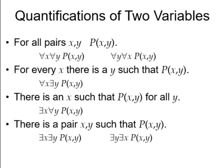Next, we have different forms of quantification of two variables. Two variables can be quantified. If we have a statement for all pairs of x and y, then we have quantification of all pairs of x and y. For all x and for all y.